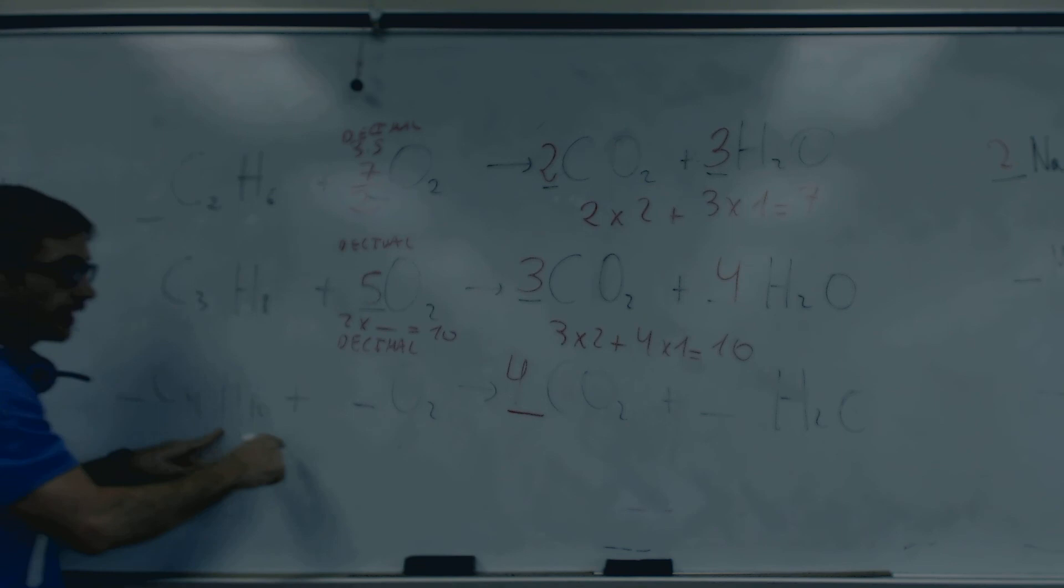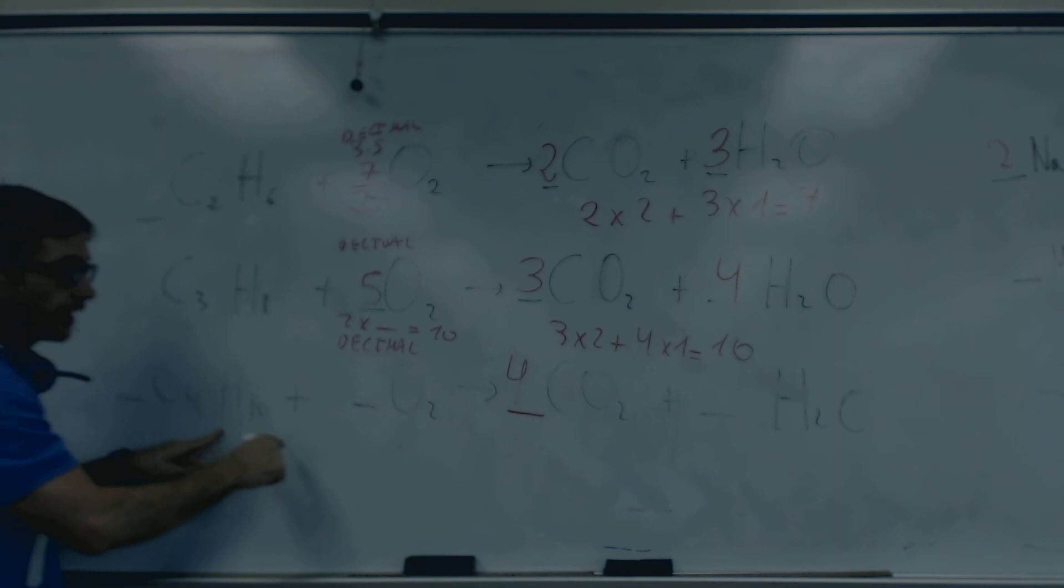Here, carbon four. Four here. Hydrogens ten. Five here. Recalculate the oxygen: four times two plus five times one is thirteen. Thirteen halves, or six point five. Okay?